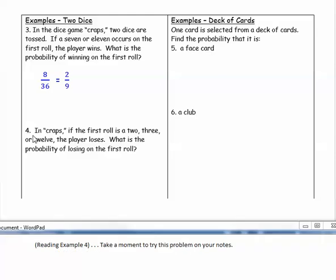Example four. In Craps, if the first roll is a 2, 3, or 12, the player loses. What is the probability of losing on the first roll? Take a moment to try this problem on your notes. Give that a try yourself.